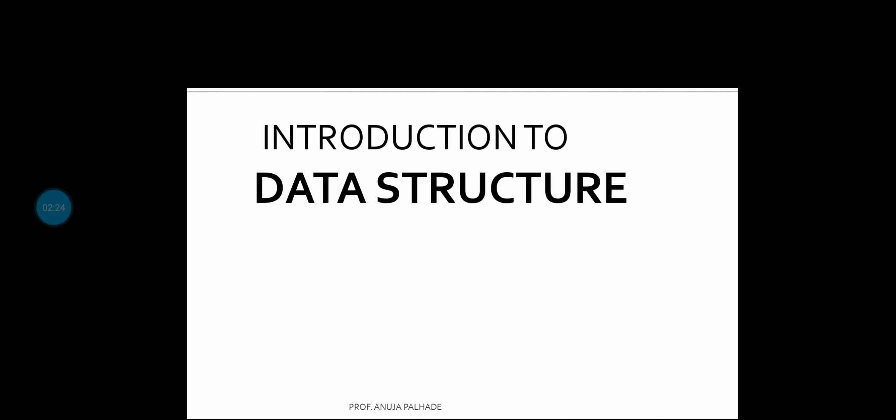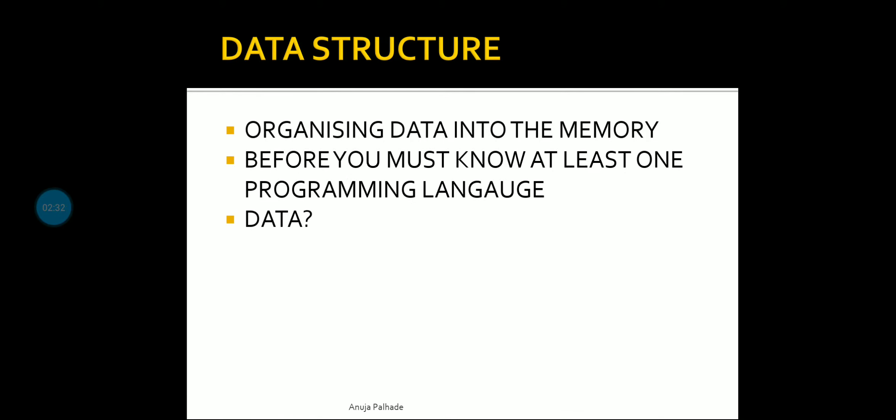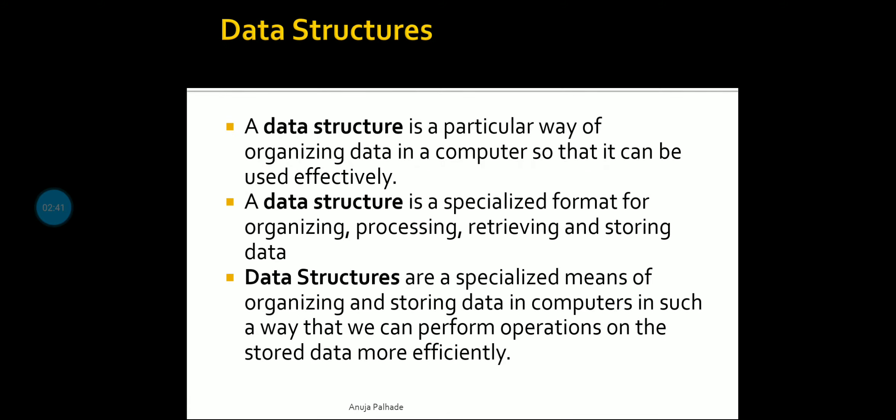By assuming you have a basic knowledge of C and Python, let's start today's journey. What is data structure? In short, data structure is organizing data into the memory. A data structure is a particular way of organizing data in a computer so that it can be used effectively. A data structure is a specialized format for organizing, processing, retrieving, and storing data. Data structures are specialized means of organizing and storing data. You can see three different definitions on screen — notice the similarity among them.